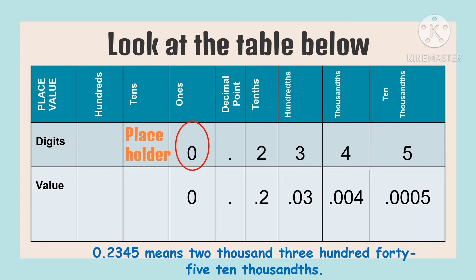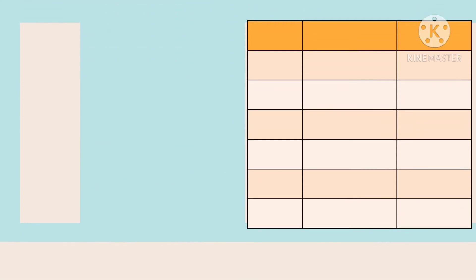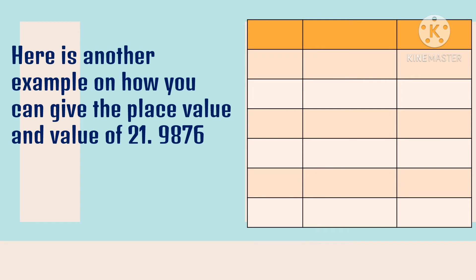You will learn in the next lesson how to read a decimal number. Here is another example on how we can give the place value and value of 21 and 9,876 ten-thousandths.